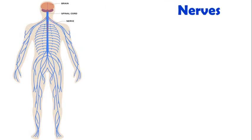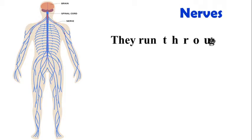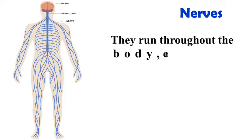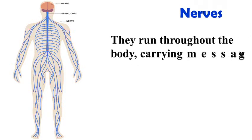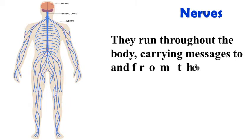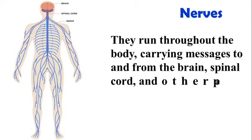Nerves: They run throughout the body, carrying messages to and from the brain, spinal cord, and other parts of the body.